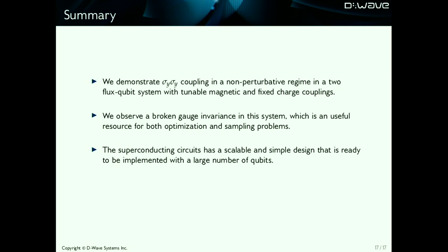So this is the end of my talk. To summarize, I hope I have convinced you that I have demonstrated sigma YY coupling, which is a non-stochastic Hamiltonian term in our system, using two methods: one is microwave spectroscopy and the other is direct time-domain coherent oscillation. We also observed broken gauge invariance in this system, which we believe can be useful for a lot of problems such as optimization and sampling. Finally, I want to emphasize that we made this system using our current fabrication steps, so we are ready to implement it with a large number of qubits.